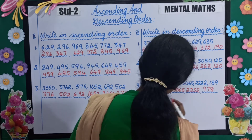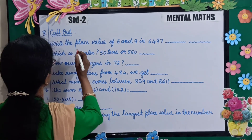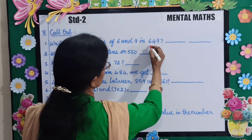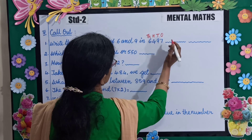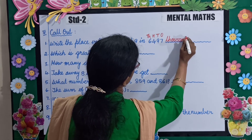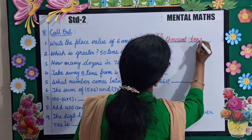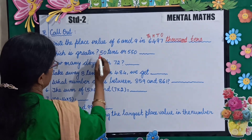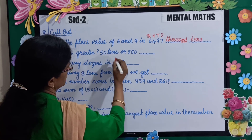Next topic: place value. Write the place value of 6 and 9 in 6497. In the number 6497, 6 is in the thousands place, so its value is 6000. And 9 is in the tens place. Which is greater: 50 tens or 550? 50 tens means 500, so 550 is greater.